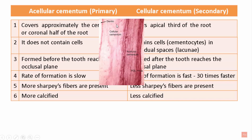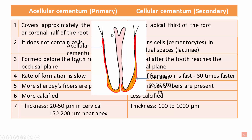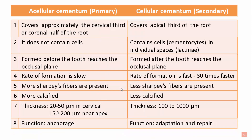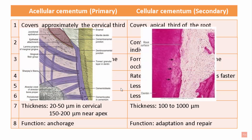The acellular cementum appears more calcified compared to cellular cementum, because the cellular cementum contains many cells and fibers that increase its organic content. In terms of thickness, acellular cementum is thin — about 20 to 50 microns in the cervical area, up to a maximum of 150 to 200 microns. Cellular cementum is much thicker, ranging from 100 to 1000 micrometers. The function of acellular cementum is anchorage, whereas cellular cementum functions in adaptation and repair.